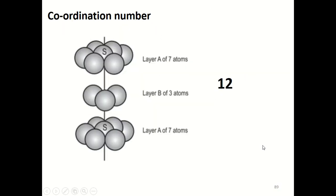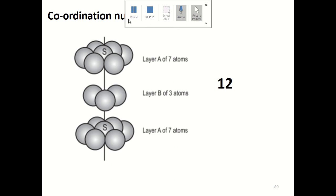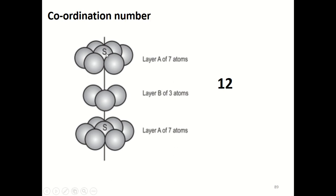The coordination number for an HCP crystal is twelve. If you look at the sphere at the center of the hexagonal plane, marked as S, it touches six spheres in the same plane and three spheres in the plane below, and similarly three spheres in the plane above. So the point S has six plus three plus three equals twelve immediate neighbors. Therefore the coordination number for the HCP crystal is twelve.